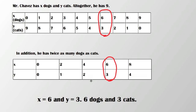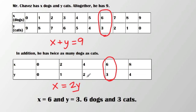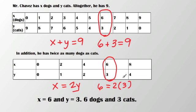If I were to set this up as an equation, my first equation would be x plus y equals nine. And then in my second equation — twice as many dogs as cats — that's x equals two y. Using a table, I can find the x and y coordinates that work for both equations, and I can plug them in to check. Six plus three equals nine — that is true. And six equals two times three — that is also true.